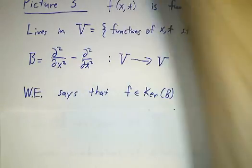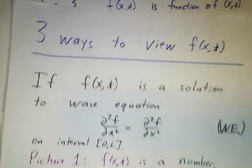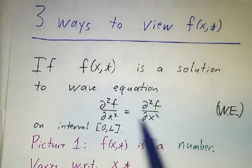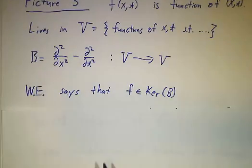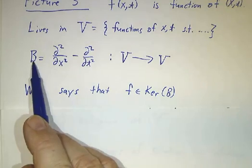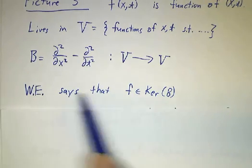And the wave equation just says that we are in the kernel of B. A solution to the wave equation, that is a function whose second derivative with respect to time equals its second derivative with respect to x, is another way of saying that B acting on that function is 0. So we're in a kernel.